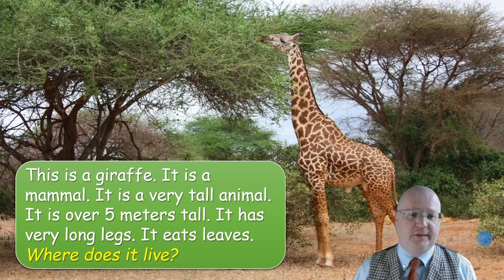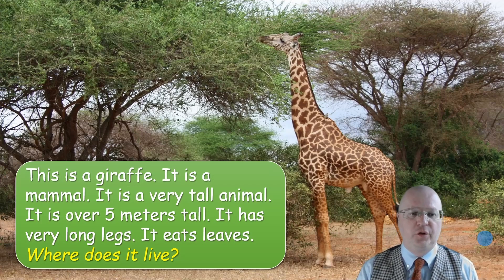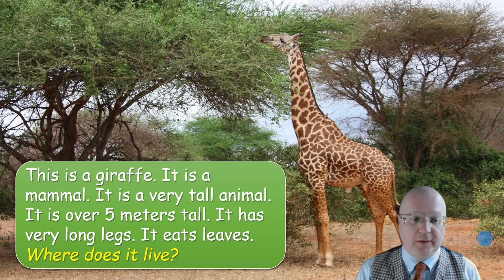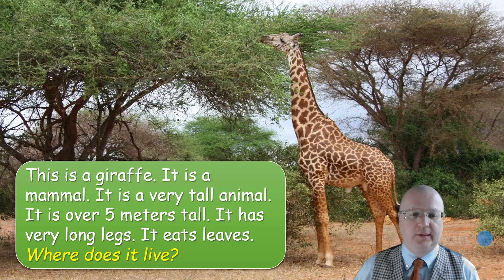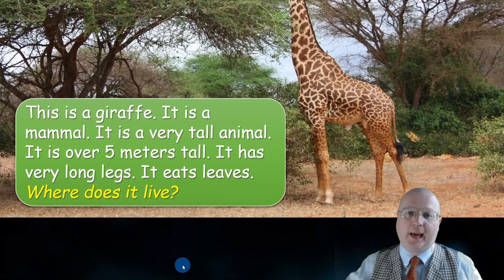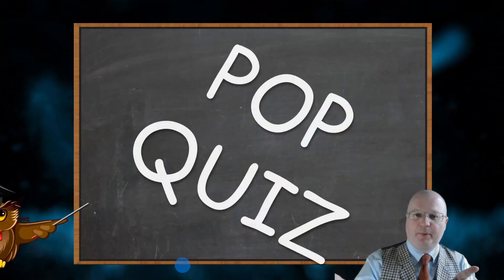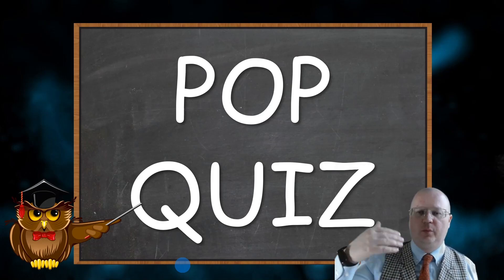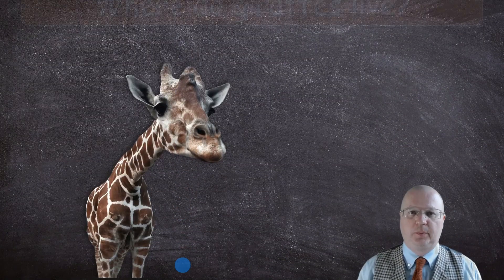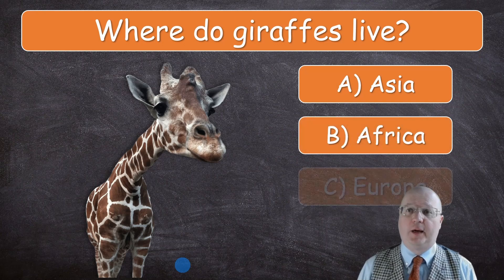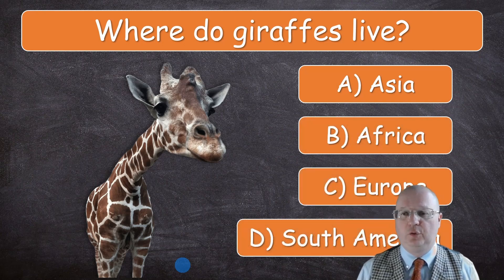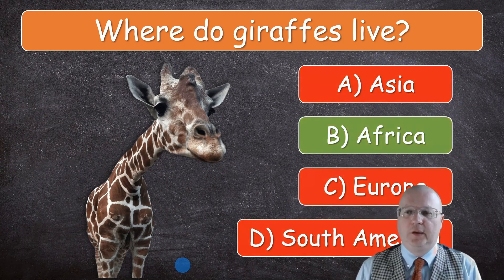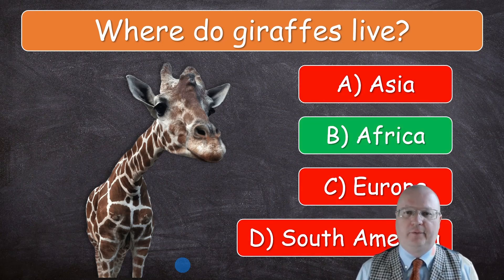This is a giraffe. It is a mammal. It is a very tall animal — over five meters tall. It has very long legs and it eats leaves. You finish with a question: where does it live? Then you have a pop quiz. You invite one boy and one girl to stand up and display the question: where do giraffes live? The correct answer is B — Africa.